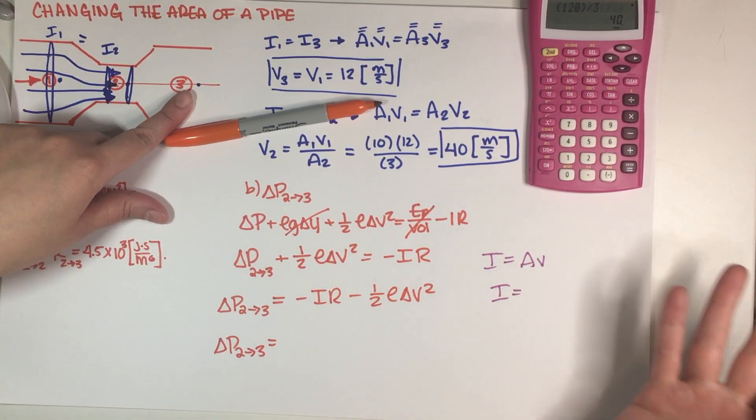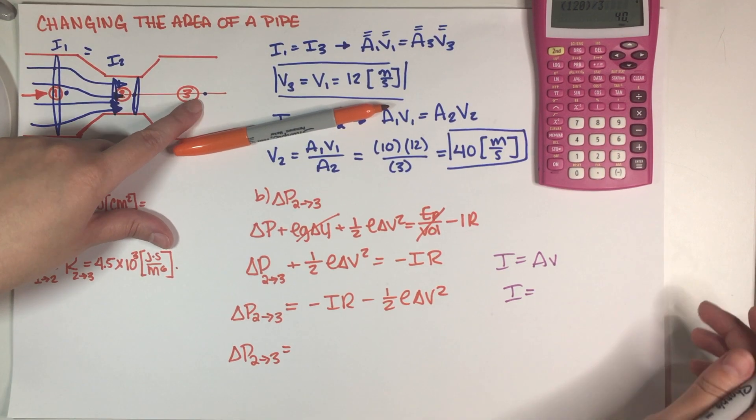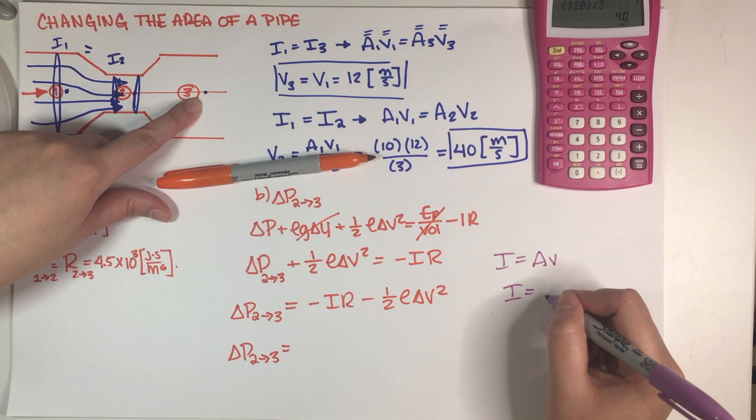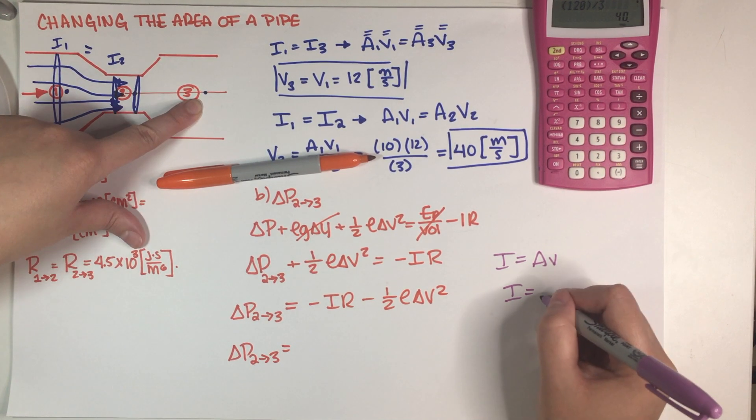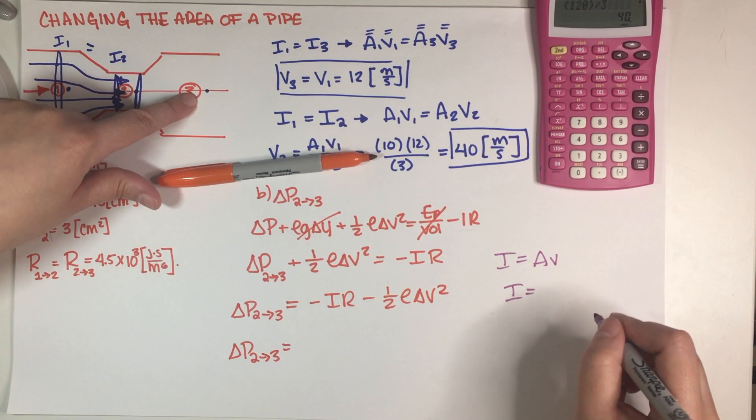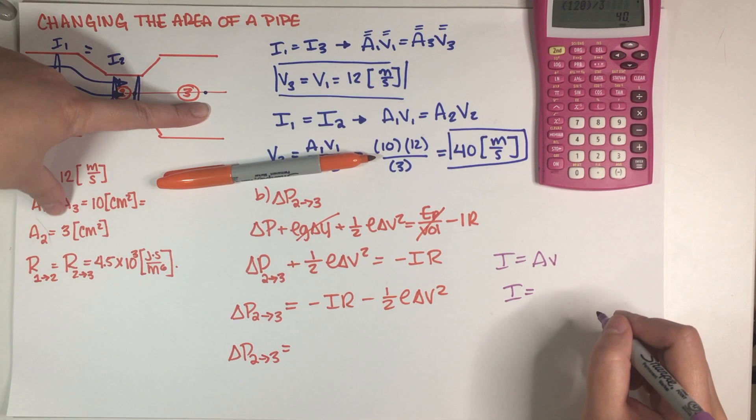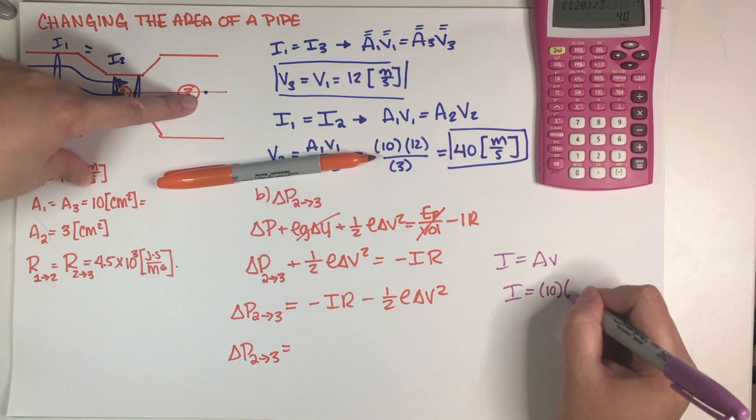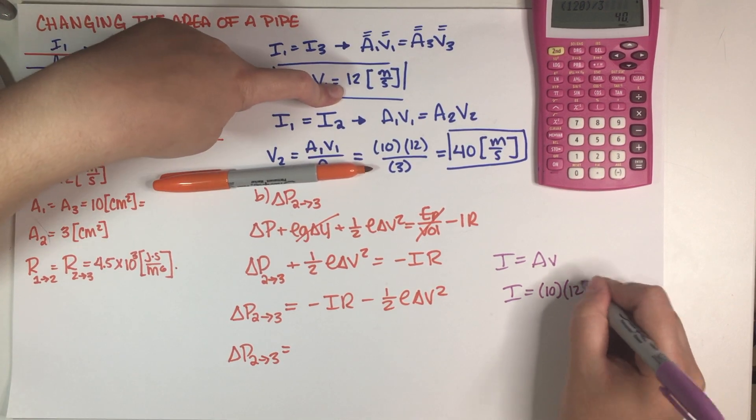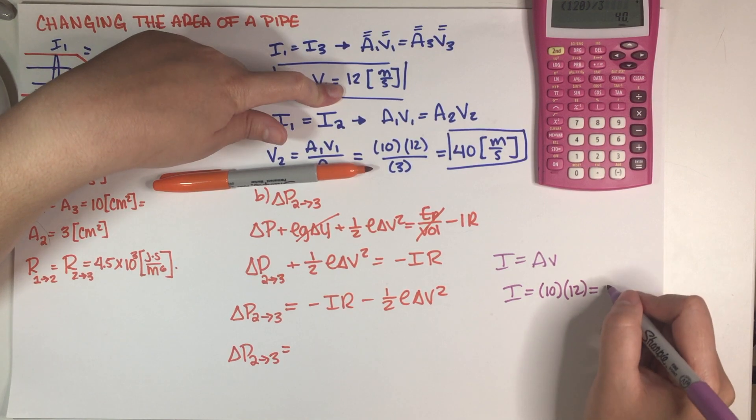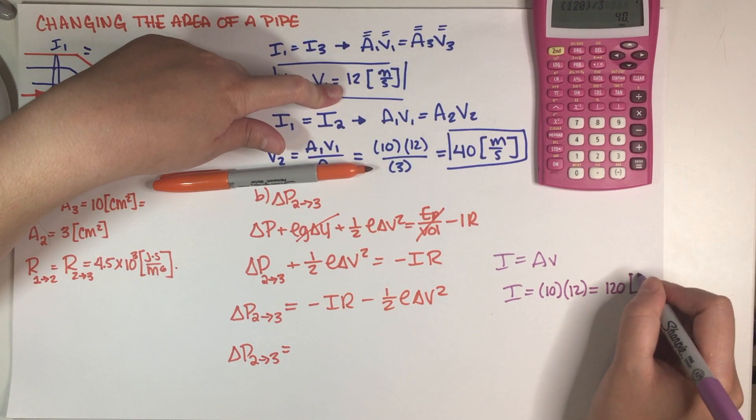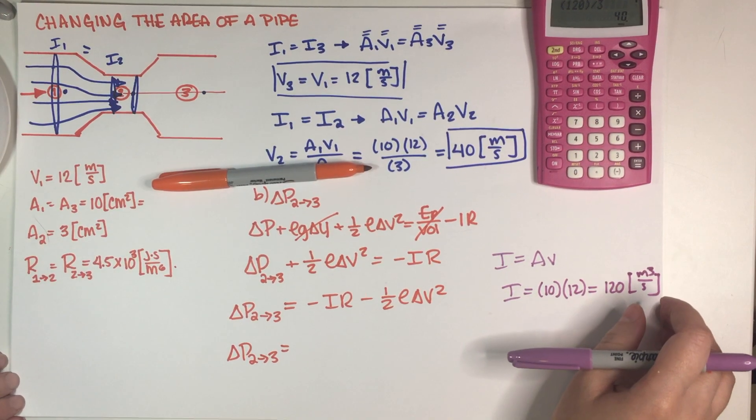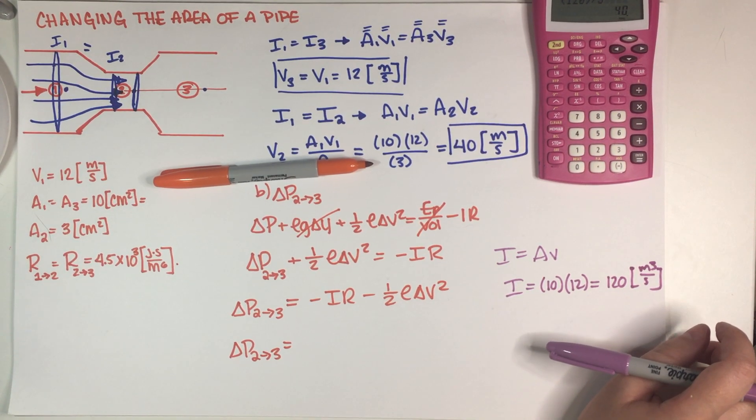So you can just take either points 2 or 3, both of them are going to work obviously. So if we work with point 3, but again it really doesn't matter if you choose this or this. So your flow rate is area times velocity. If I'm using A3 I need to make sure that I use this area and this velocity. So this area is equal to 10 and this velocity is equal to 12, so my flow rate is going to be equal to 120.